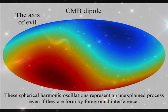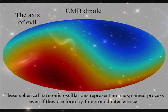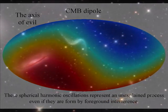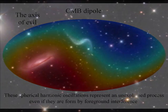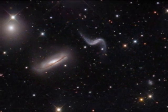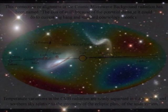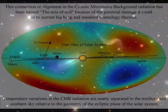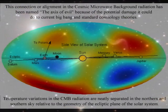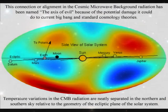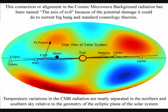This axis is correlated back through space and time to us, with the cosmic microwave background radiation being slightly warmer in the direction of movement of the local group of galaxies that includes the Milky Way galaxy. Also, these temperature variations are neatly separated in the northern and southern sky relative to the geometry of the elliptic plane of the solar system.